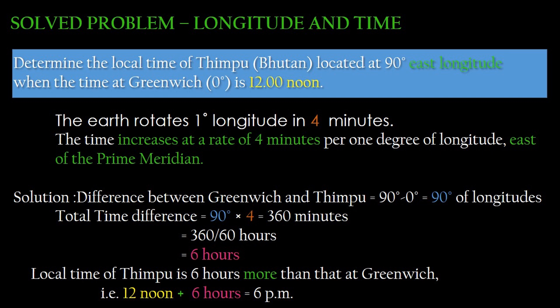The second step is to find out the time difference: multiply 90 degrees of longitude by 4 minutes, that is 360 minutes. To convert 360 minutes into hours, divide by 60, that is 6 hours. The local time of Thimphu is 6 hours more than that at Greenwich: 12 noon plus 6 hours equals 6 pm.